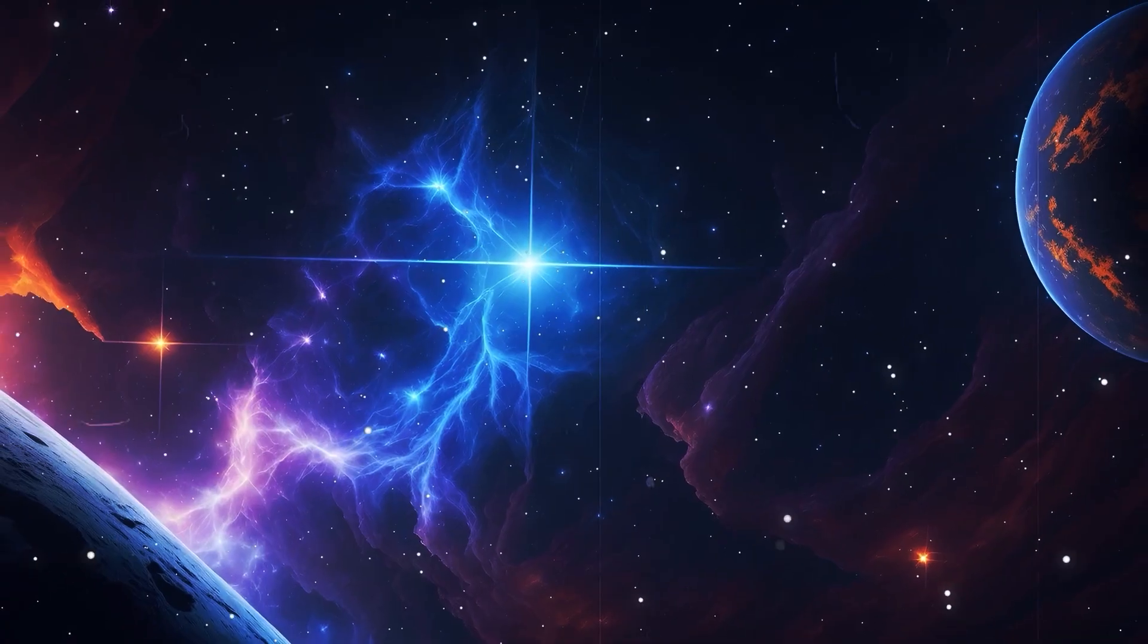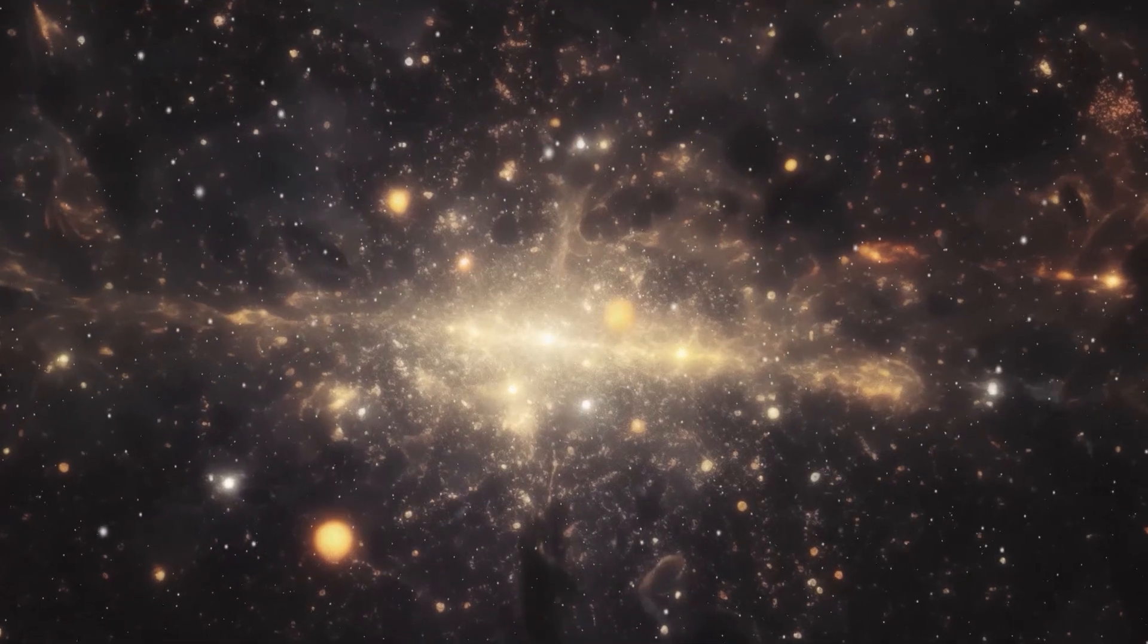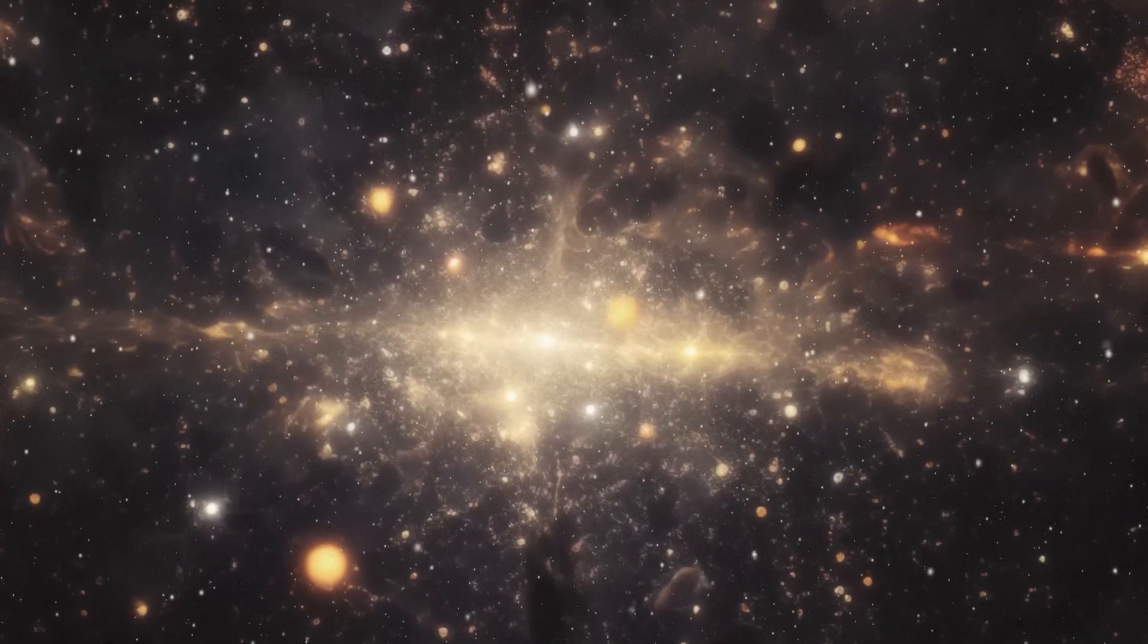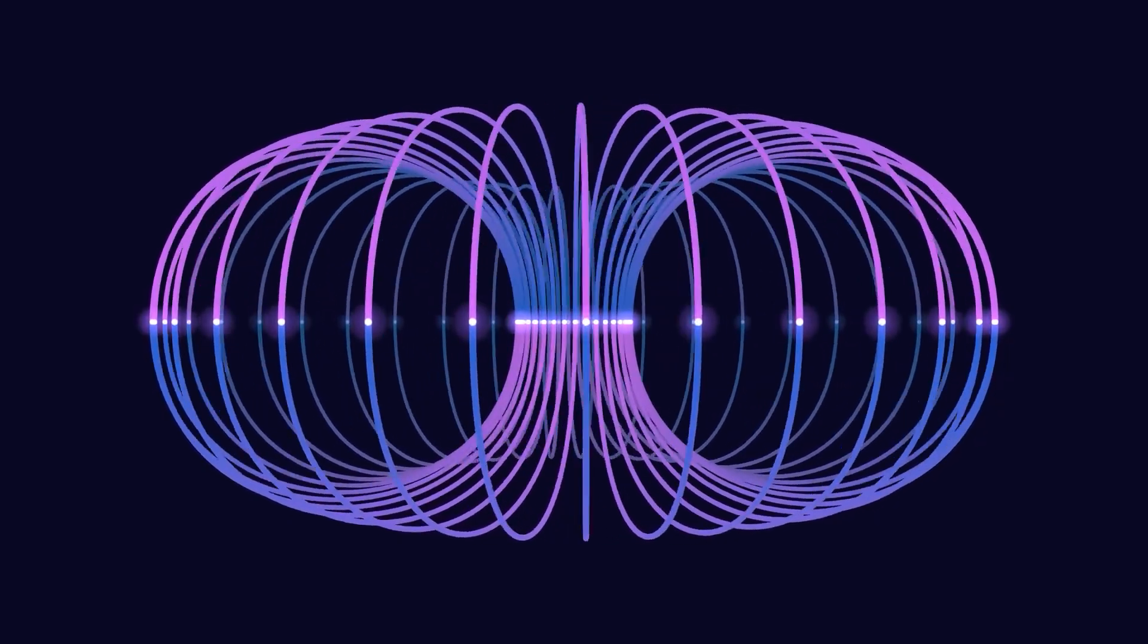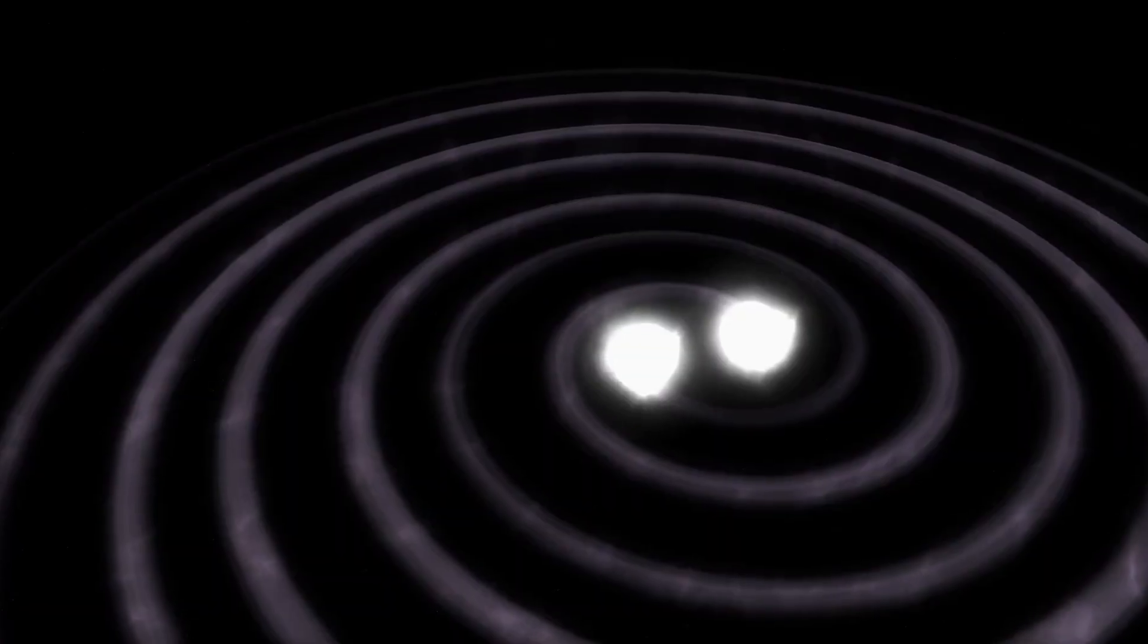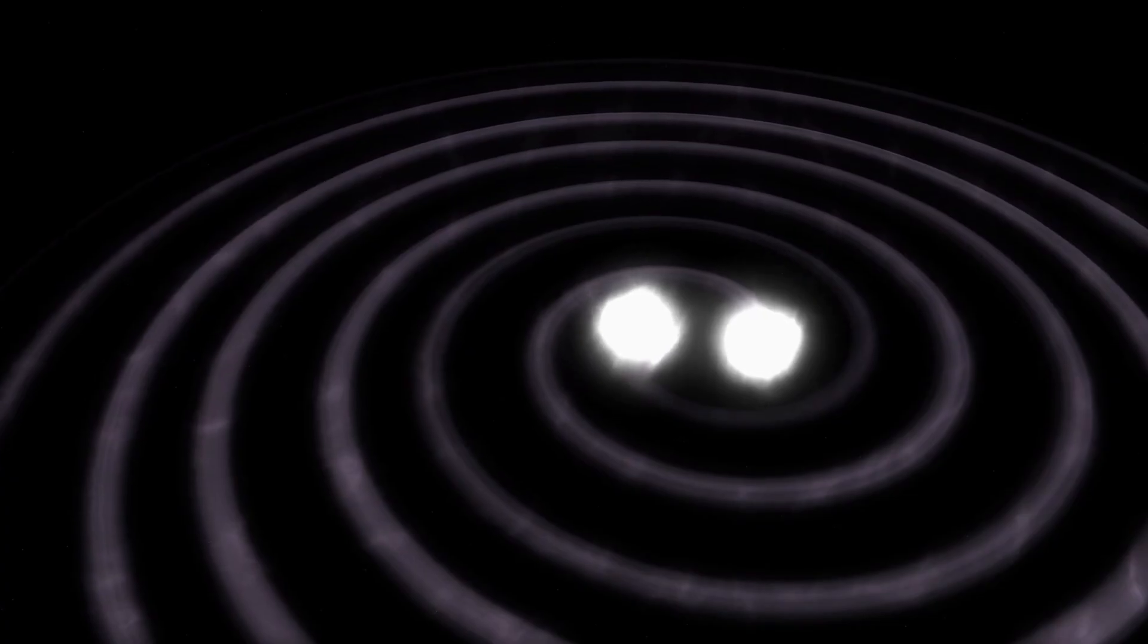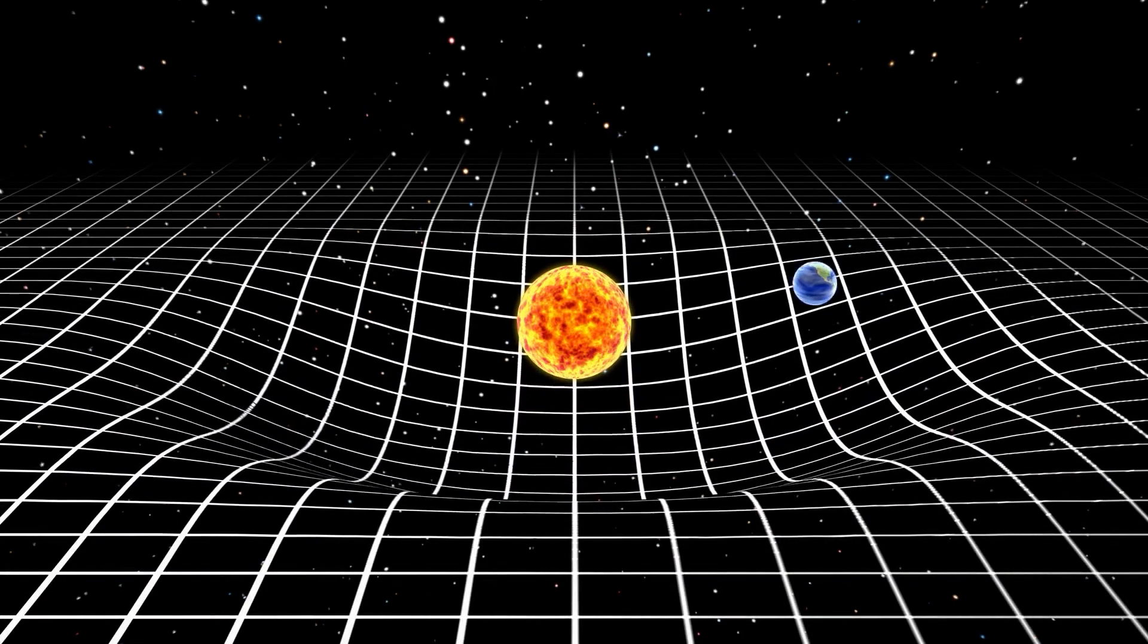It weakens the further you move away from a mass, but despite these effects, it never disappears completely. Even the smallest mass exerts a tiny but measurable attraction. So basically, you too are a mass that causes gravitational waves and has an attractive effect. It is precisely this property that explains why gravity is the architect of the cosmos.